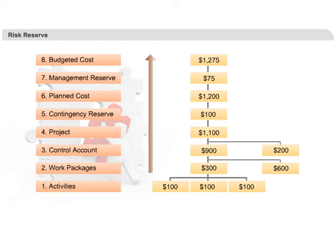Once the planned cost is arrived at, another reserve gets added, and that's called management reserve. By adding contingency reserve, you have taken care of known uncertainties, and by adding management reserve, you take care of unknown uncertainties. But on what basis do you add for unknown uncertainties? It's totally based on experience, or what we call in PMI language, expert judgment.